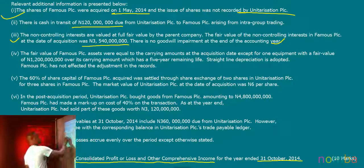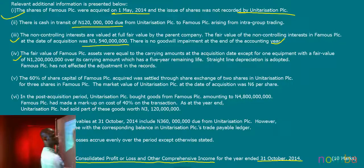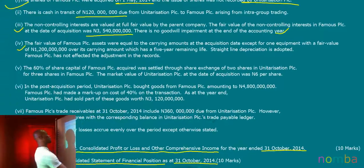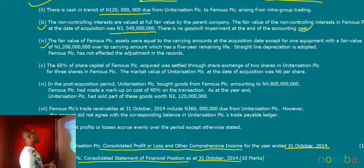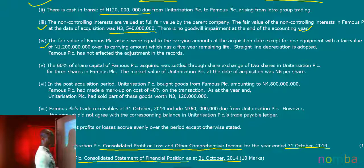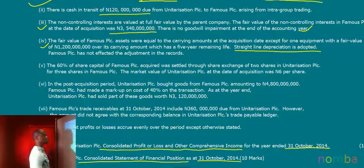Additional information four says the fair value of Famous PLC's assets were equal to the carrying amount at the acquisition date, except for one piece of equipment with a fair value of 1,200 million over its carrying amount, which has a five-year remaining life. The straight-line method is adopted, and Famous PLC has not effected this adjustment in its records.